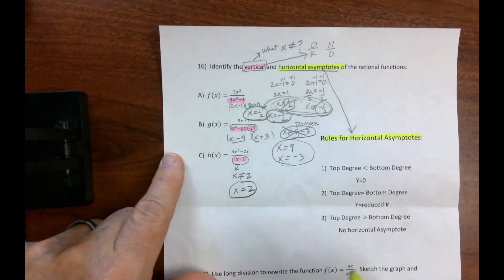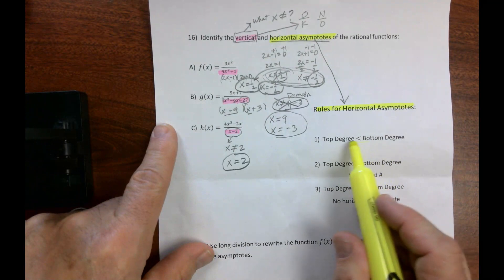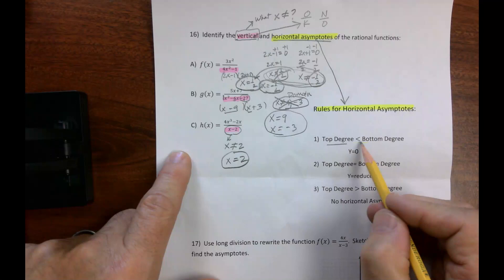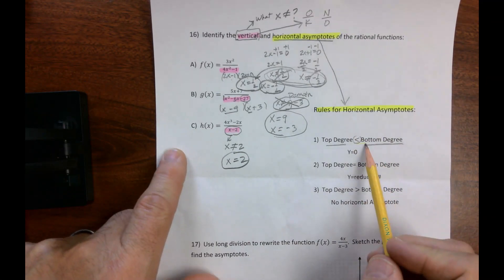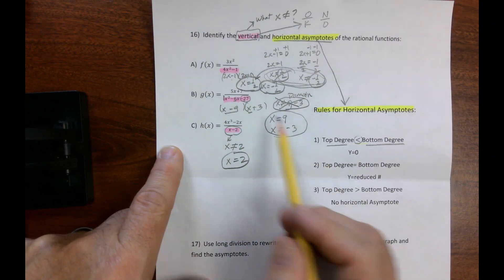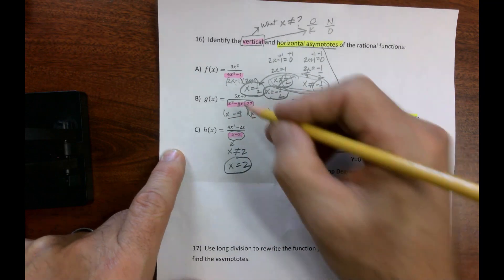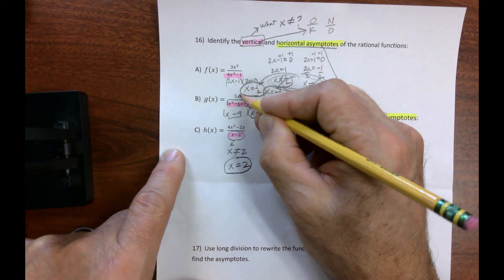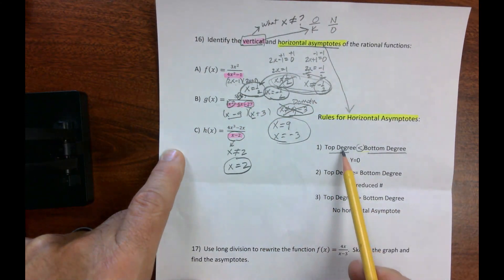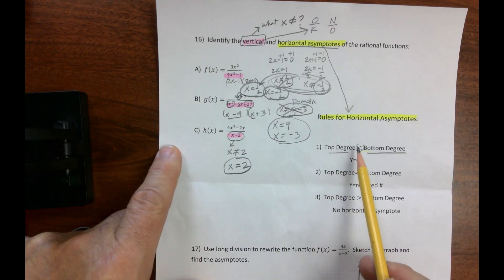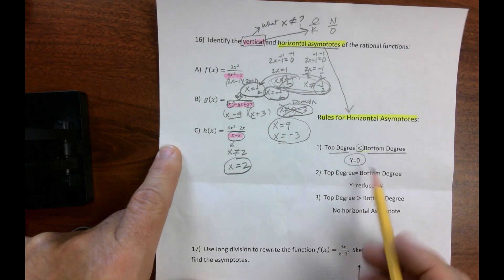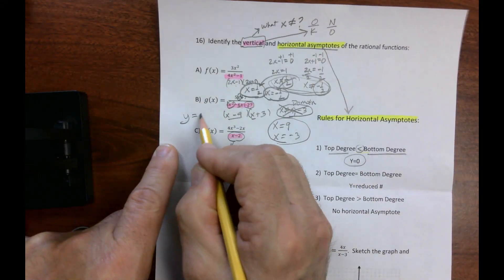So if we look at horizontal asymptotes, what we have to do is wonder about these things here. So, it says, the top degree less than the bottom degree. Let's go on the hunt for that. The top degree is less than the bottom degree, so 1 goes with b. How do I know that? There's an invisible 1 right there on x, that's all I'm worried about, and there's a 2 there. So, the top degree, the highest degree in the top is less than the highest degree in the bottom. Therefore, for letter b, our horizontal asymptote would be y equals 0.